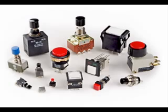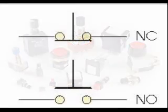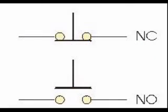Push-button switches are two-position devices actuated with a button that is pressed and released. These are schematic diagram symbols for push-button switches. Notice that there are two of them: normally open, NO, and normally closed, NC.